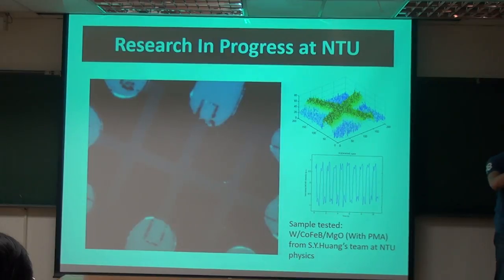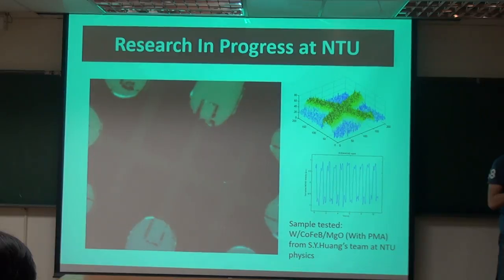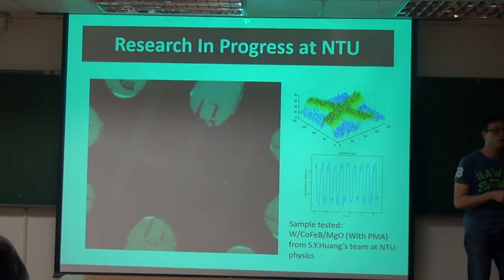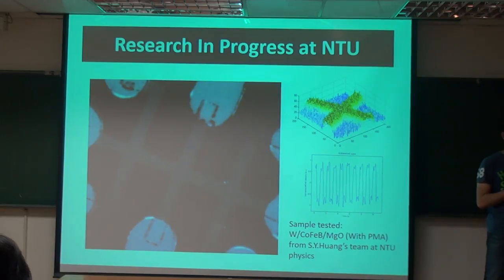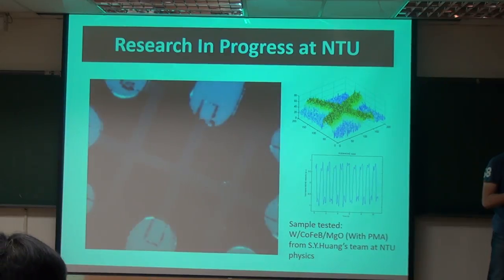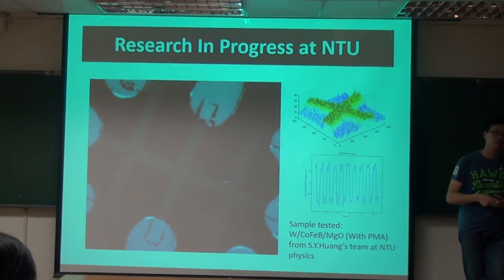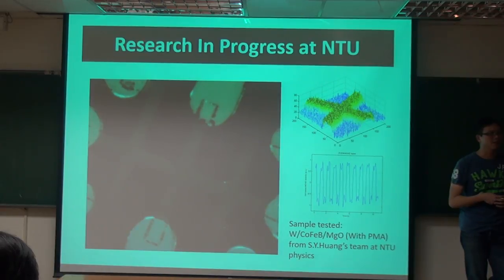Coherence means those spins are having the same alignment, but typically they will have different precession phases. When people talk about spin transport, they talk about diffusive transport — I don't think coherence comes up at all in the literature I've read, unless you're doing quantum computation. In spintronics, people don't really talk about coherence.